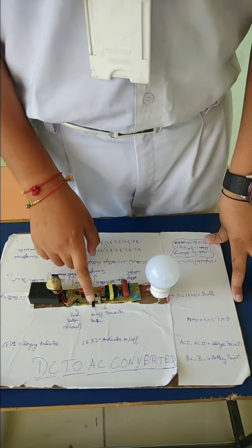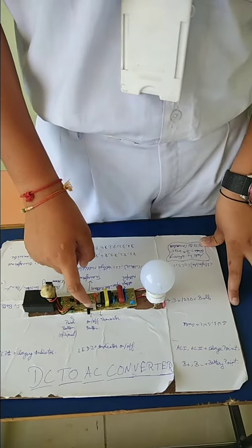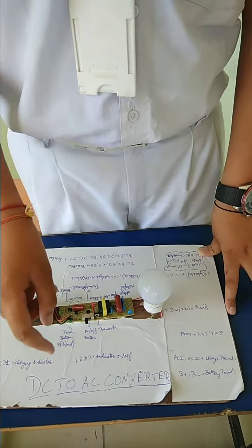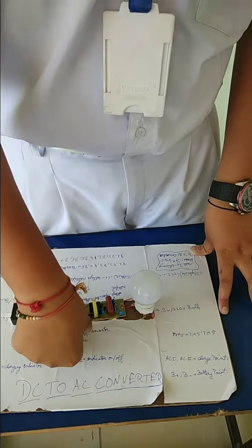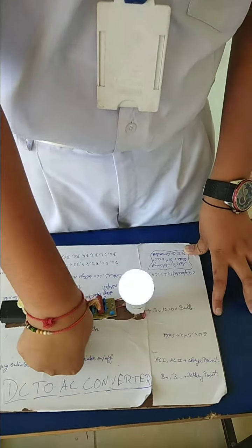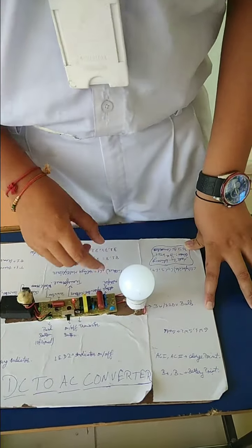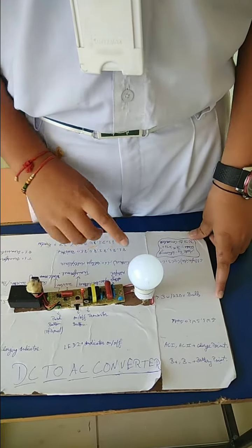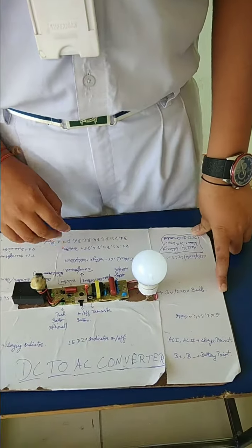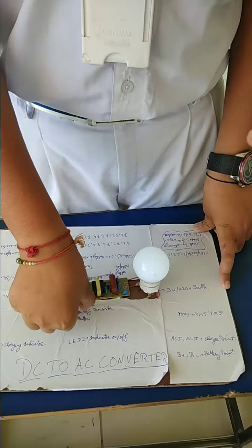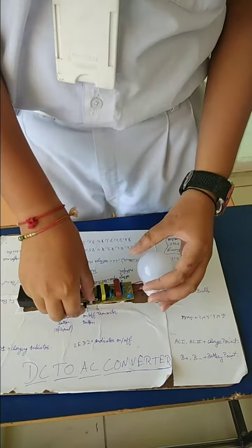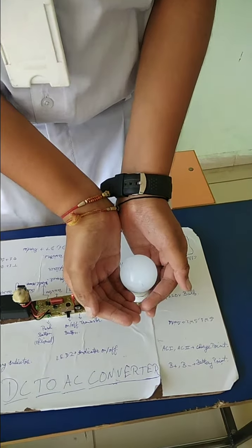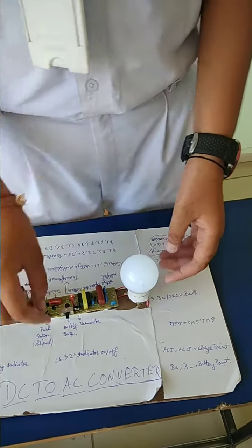Then this switch controls whether we turn it on or off. When we turn the switch on, this bulb works. You can see it — it is working.